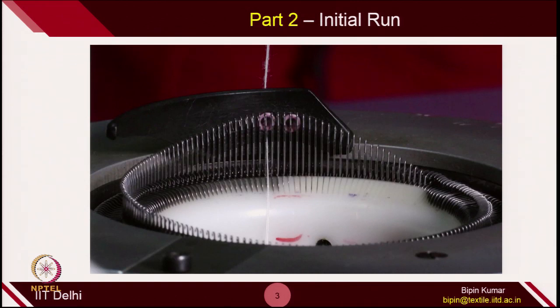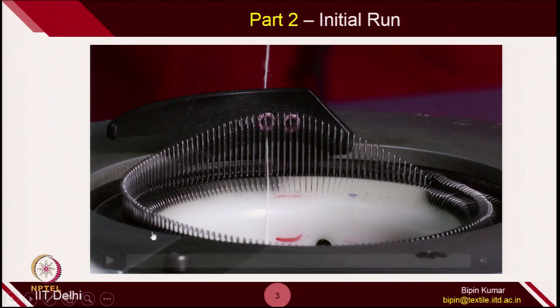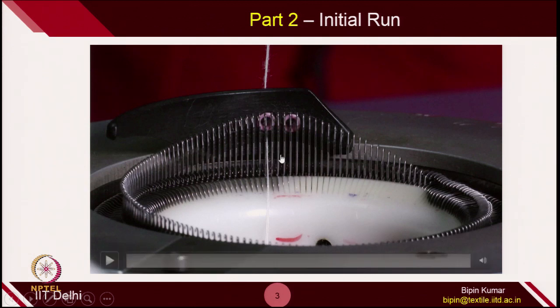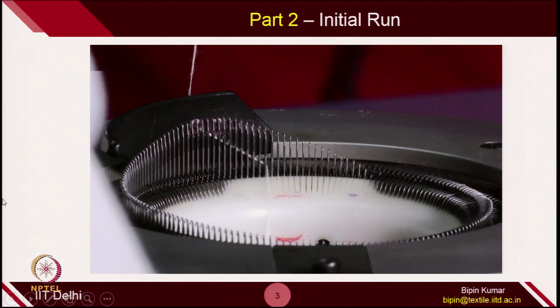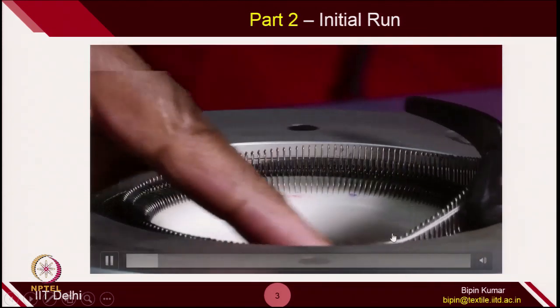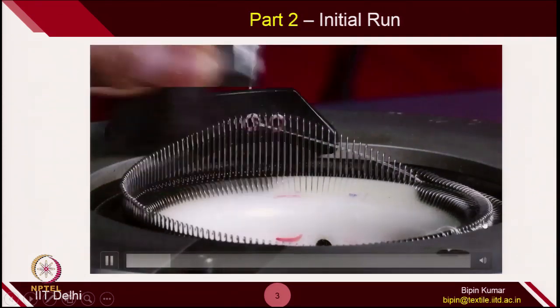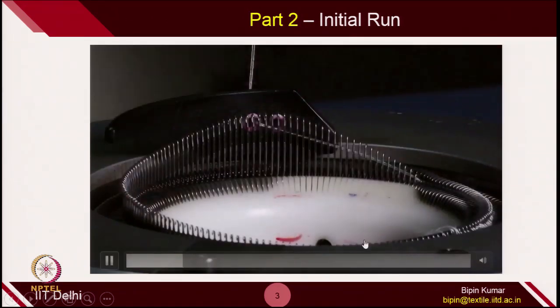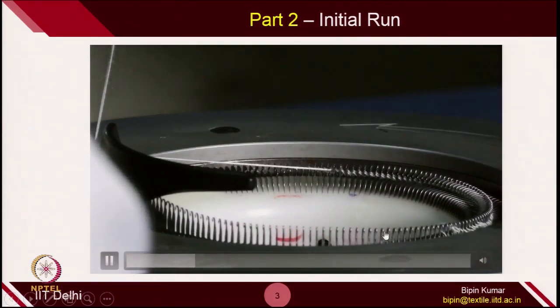Let's see the initial run. The initial run is a little bit difficult, because to catch the yarn, the latch of the needle needs to be open. There was no old loop, so it is difficult to ensure all the needle latches will be open across the circumference. We need some kind of brush to open the latch for all the needles so that they can keep catching the yarn during rotation. Not all the needles will catch the yarn because the latch is not open.